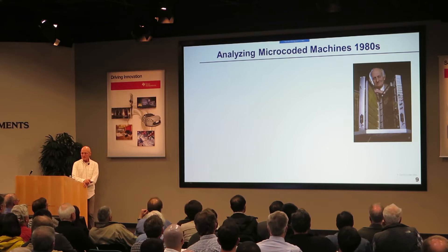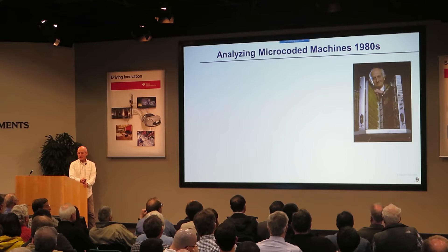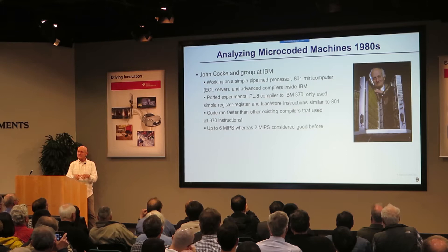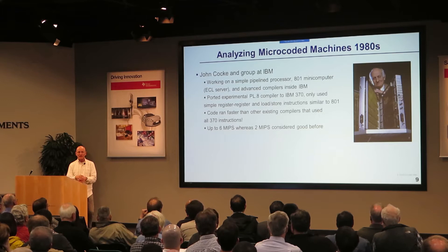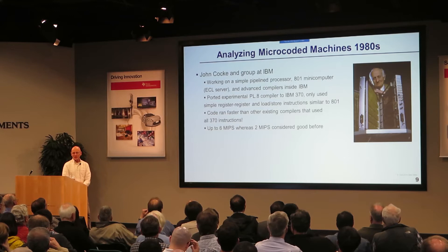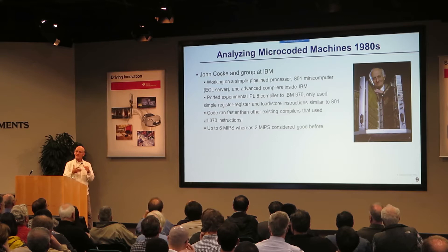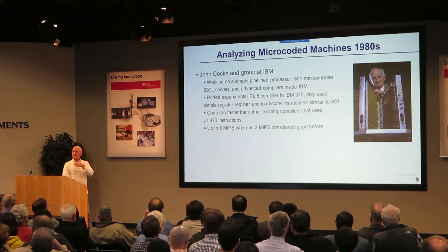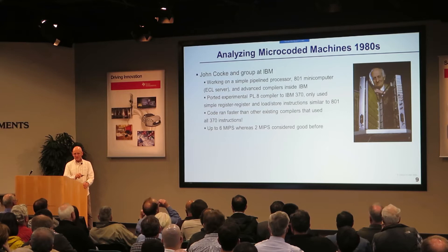What happened in these micro-coded machines? John Cock, a Turing Award winner and famous computer scientist, took a look at these mainframe computers at IBM. He was building a simple pipeline processor called the 801. He ported his experimental compiler to the big mainframes and decided not to use the complicated instructions — just plain old loads and stores and simple instructions. And it ran faster. If you didn't use the complicated stuff, it sped programs up by factors of three.